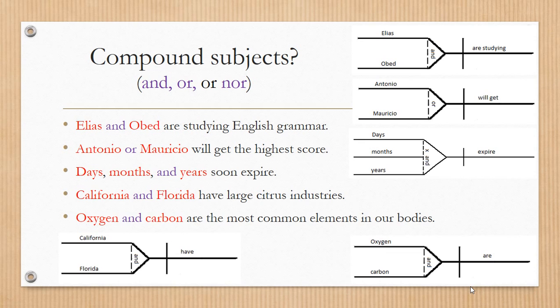When we are talking about compound subjects, it means that we have more than one person, animal, or thing doing the action, or we are talking about more than one person, animal, or thing. These people or animals, these subjects, are going to be joined or linked by these connectors.